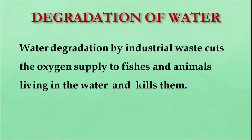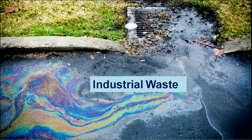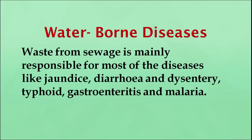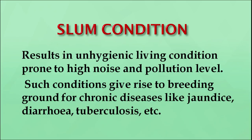Degradation of water: industrial waste cuts off oxygen supply to fishes and animals living in the water and kills them. Here is a picture showing fish dying because of water pollution. Waterborne diseases — waste from sewage is mainly responsible for diseases like jaundice, diarrhea and dysentery, typhoid, gastroenteritis and malaria. Slum conditions result in unhygienic living conditions prone to high noise and pollution levels. Such conditions give rise to breeding grounds for chronic diseases like jaundice, diarrhea and tuberculosis.